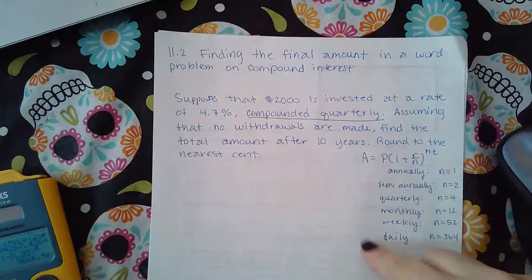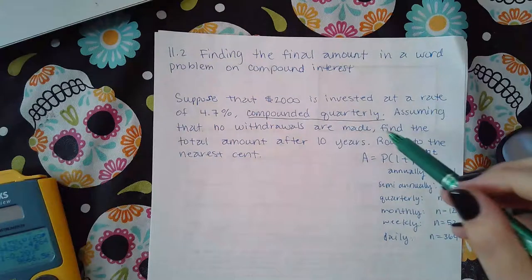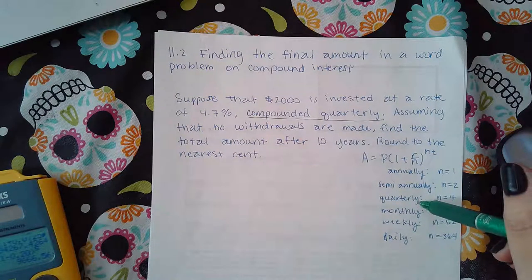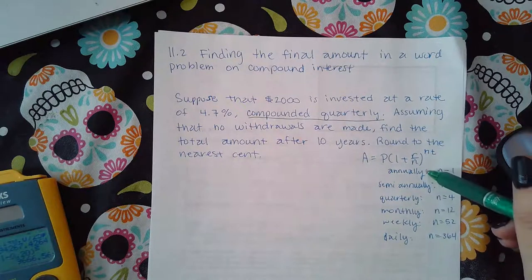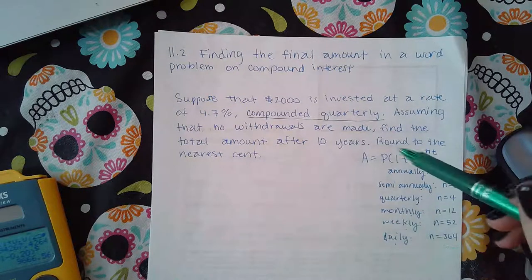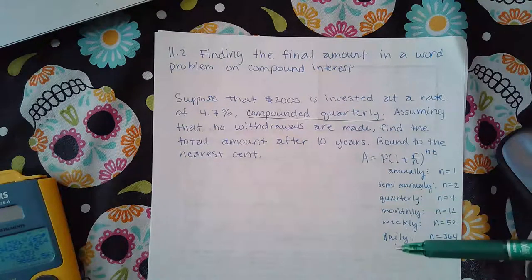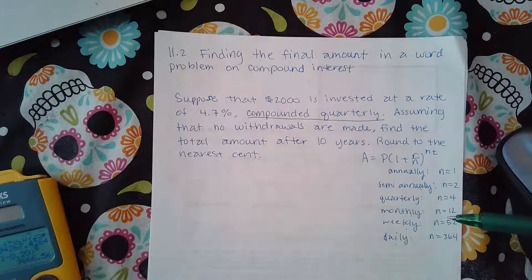And I just put all of these values here, depending on which one you get for your problem. It may not be compounded quarterly. Your example may be compounded annually or semi-annually or monthly or weekly or daily. So I just wanted to have all of them here just to jog back your memory if it's been a while since you did the previous topic, which was the introduction to this stuff.